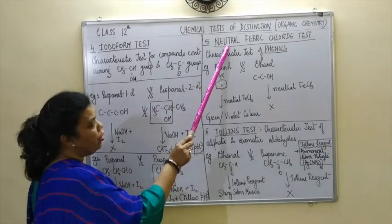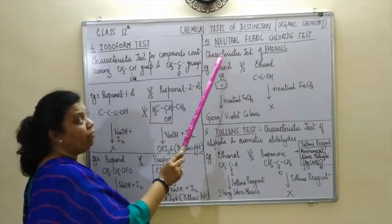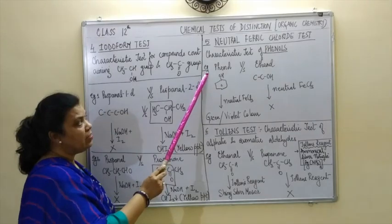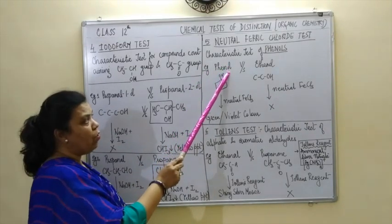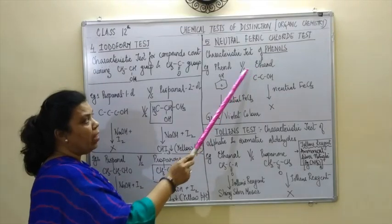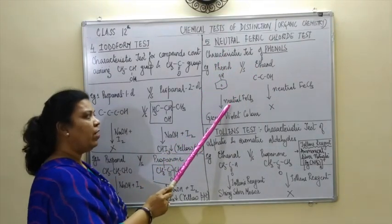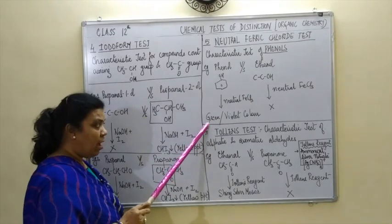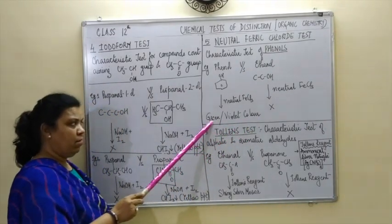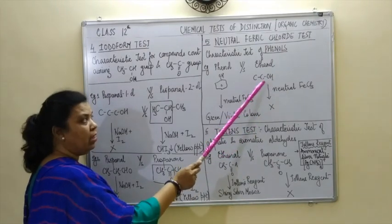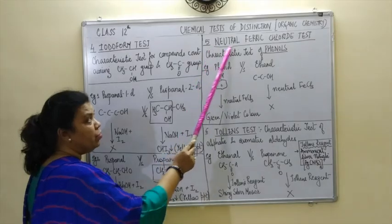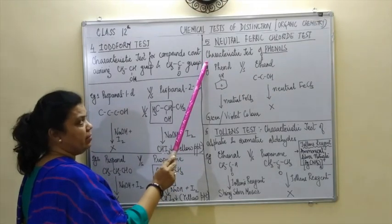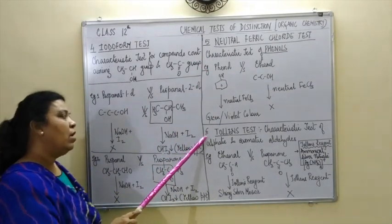Let us move on to the next test, and the name of the test is neutral ferric chloride test. This neutral ferric chloride test is the characteristic test for phenols. For example, you are asked to distinguish between phenol and ethanol. Apply neutral ferric chloride to both samples. In case of phenol, the observation you will get is the appearance of a green or violet color. No such observation will appear in case of ethanol. Remember, the neutral ferric chloride test is the characteristic test for phenol — it is a very important test.